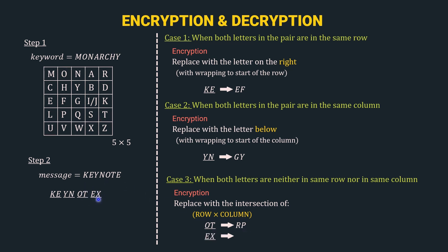Let's take the next diagram EX to understand case 3 further. E and X are neither in the same row nor the same column. For E: take row of E and column of X — the intersection is I/J. I will continue with I, so E is replaced by I. For X: take row of X and column of E — the intersection is U. So X is replaced by U. EX encrypts to IU.